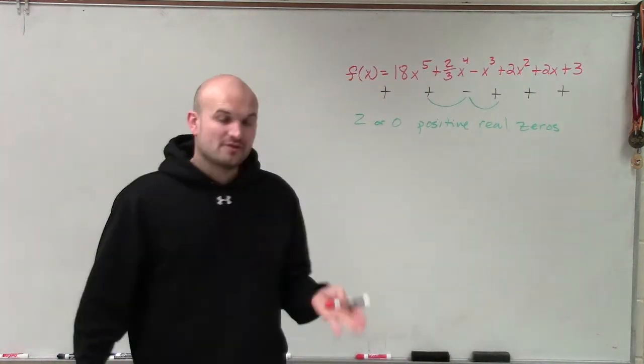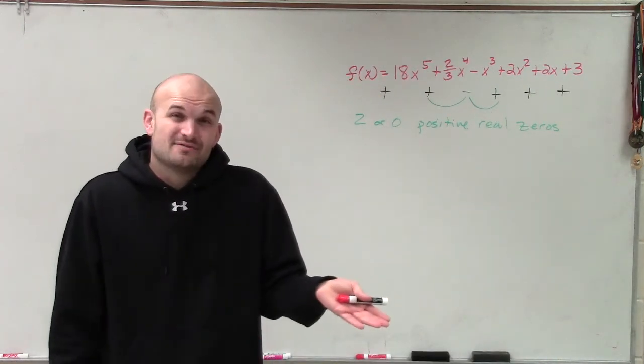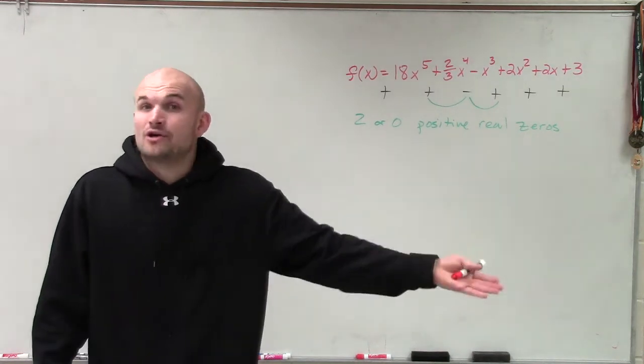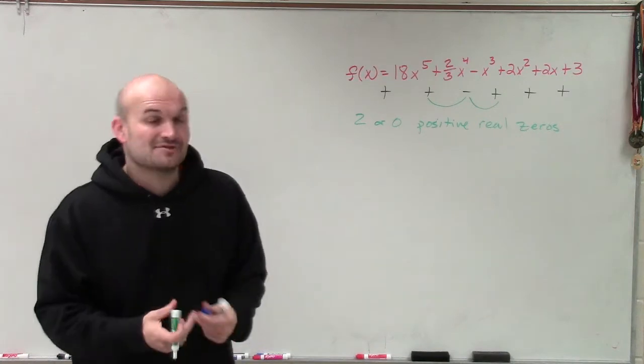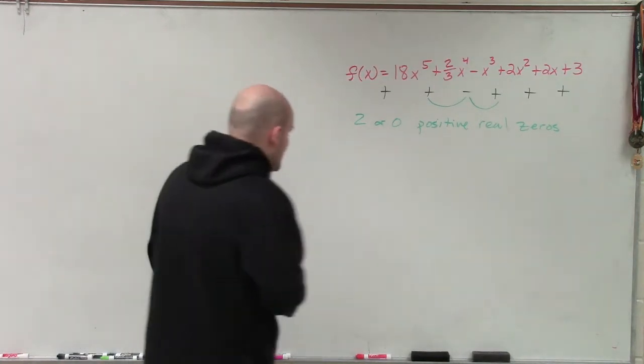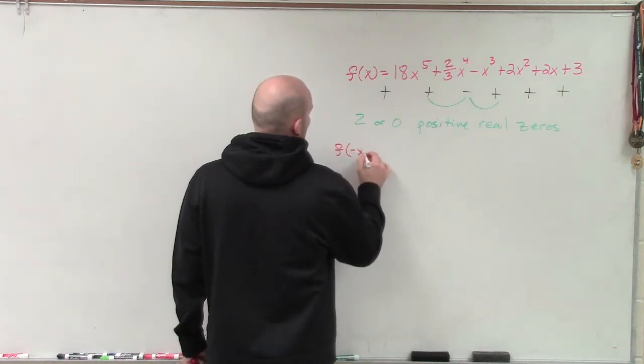So that means in this function, I could have two positive real zeros, or I could have zero positive real zeros. And if it's not a positive real zero, then it has to be a negative. So the next thing we'd want to do is determine the negative real zeros. To do that, I need to evaluate for f of negative x, so now my input variable is going to be a negative x rather than a positive x.